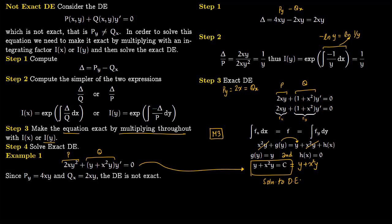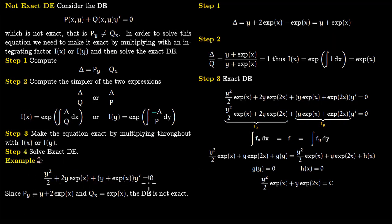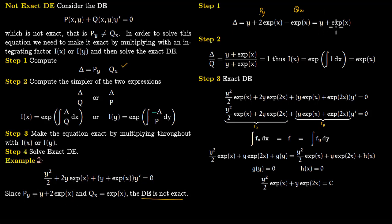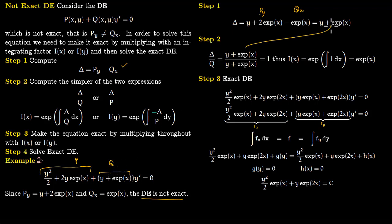The second example is another differential equation. We first check exactness by taking the partial of P with respect to y, which gives y plus 2 exponential of x, and the partial of Q with respect to x, which gives exponential of x. Since these are not equal, the equation is not exact. We compute delta as P sub y minus Q sub x, which gives y plus exponential of x.